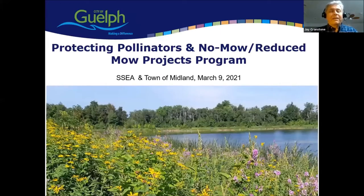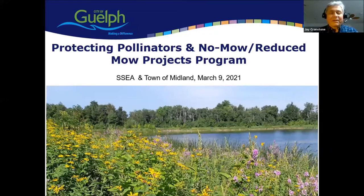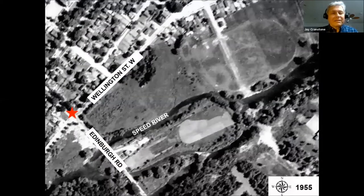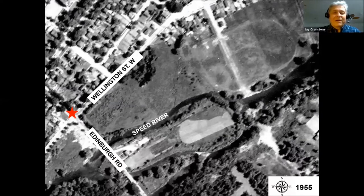Thanks for the invitation. To put this in context, I'll provide information on where we've been, where we are today, and where we see ourselves going. I dug up some old air photos to illustrate changes over time. In 1955 — the year after Hurricane Hazel — you can see the Speed River with a meander and quite natural conditions. By 1965, there's a huge difference: the river's been straightened, the meander is gone, flood control facilities are in place, and the rivers were mown right to the edge all the way along the two key river systems in the city.